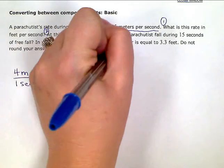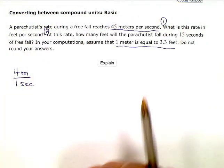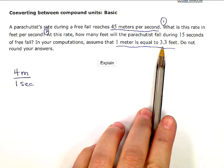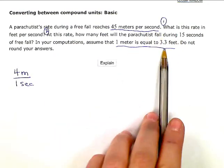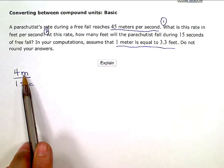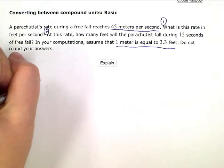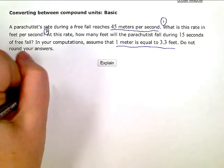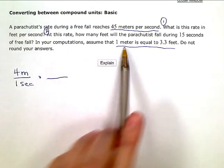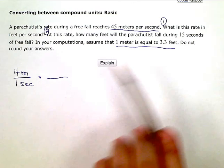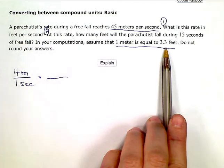And they gave me a little help. They said one meter is equal to 3.3 feet. Now this is my conversion information that's going to help me change this meters into feet. So I'm going to multiply by another ratio here.